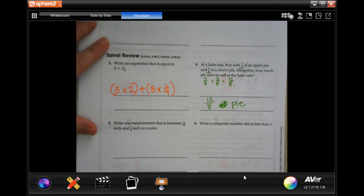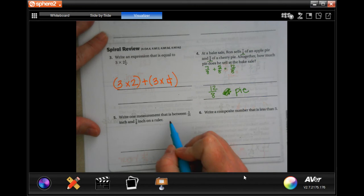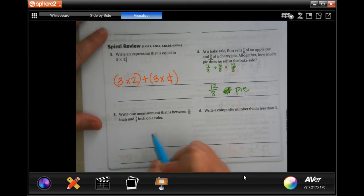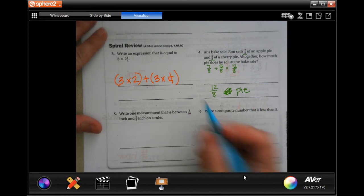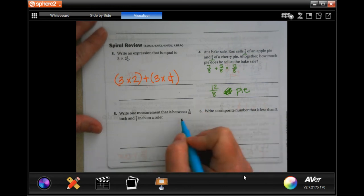Write one measurement that is between three-sixteenths and seven-eighths inch on a ruler. So, first, we need to have a common denominator.